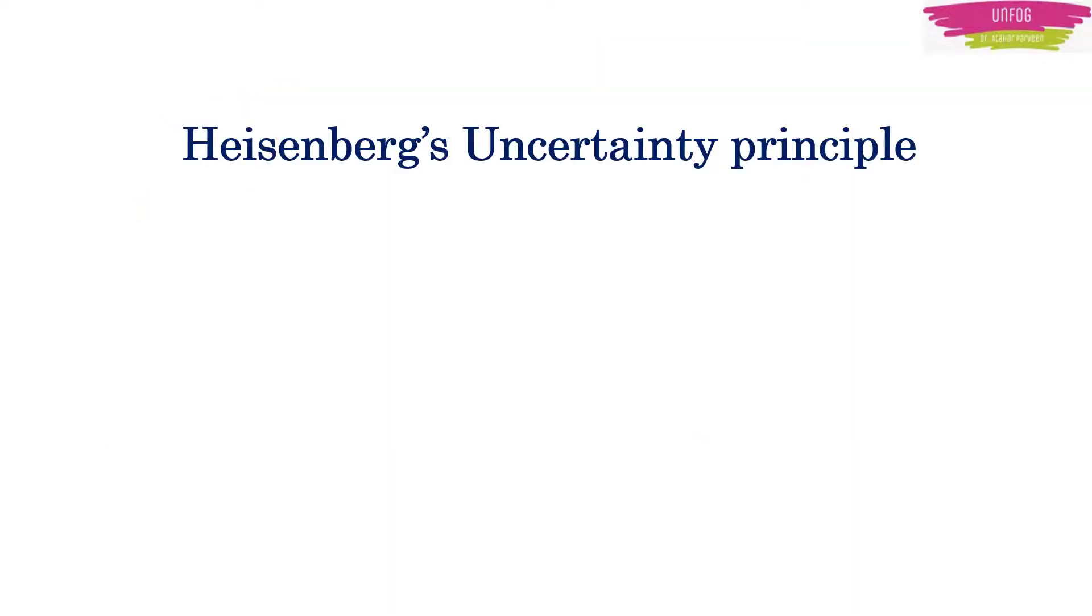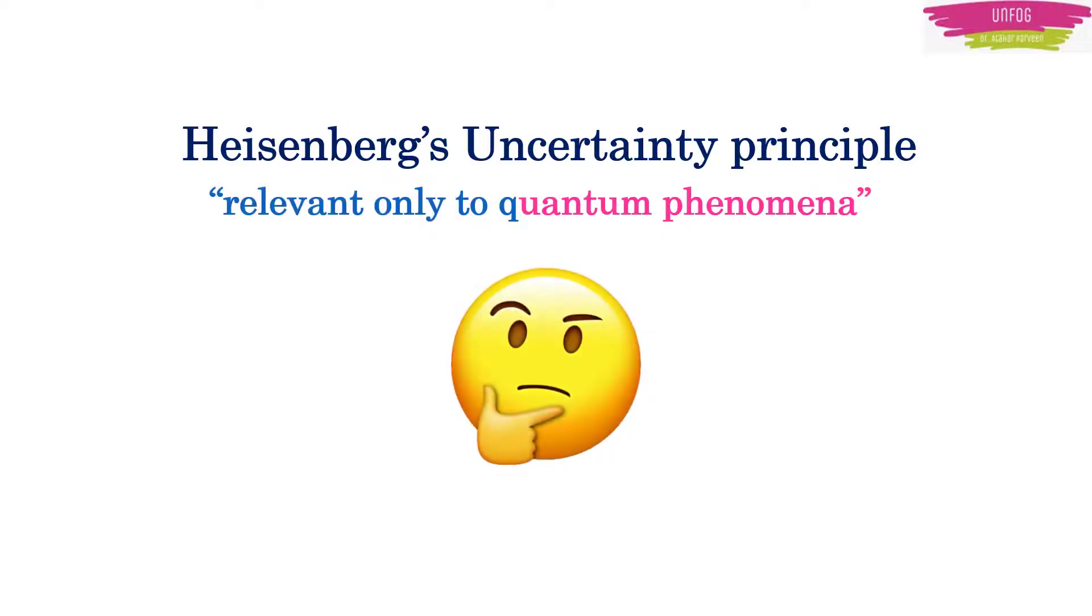Now you can raise a question that okay, electron does not jump into the nucleus. But all of a sudden, I jumped from classical to quantum physics because Heisenberg's uncertainty principle is relevant only to quantum phenomena and I started off with a classical phenomena.